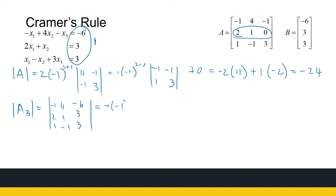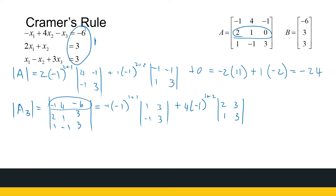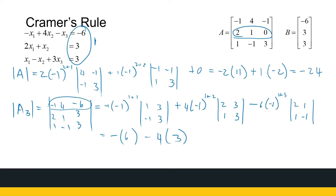So it's minus one times minus one to the power one plus one, times the determinant — eliminating that row and column — so it's one, three, minus one, three, plus four times minus one to the power row one column two, times the determinant of two, three, one, one, minus one. Minus six times minus one to the power four. Let's see what that gives: minus one times one is minus three minus minus three is three plus three, so that gives six. Minus four times six minus three is three. Minus six times minus two minus one is minus three, so it's eighteen minus twelve minus six. That gives me zero.